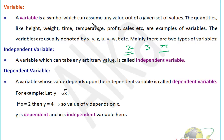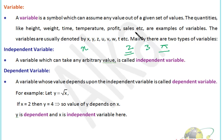A variable is a symbol which can take any value out of a given set of values. For example, x can be 1, 2, 3, or any real number — rational, irrational, any number. So x is a variable. Quantities like height, weight, time, temperature, profit, and sales are examples of variables. Variables are usually denoted by x, y, z, u, v, w, or any alphabet.